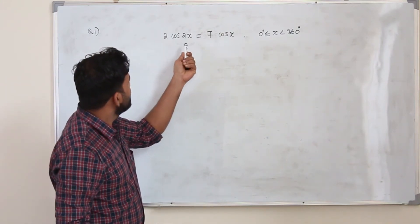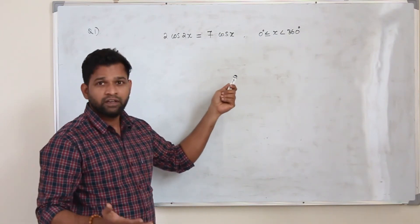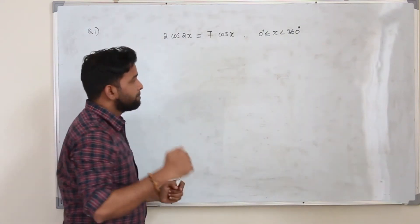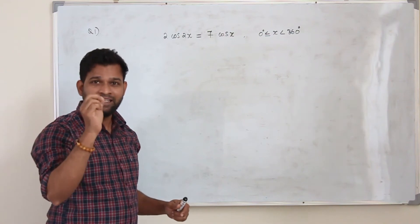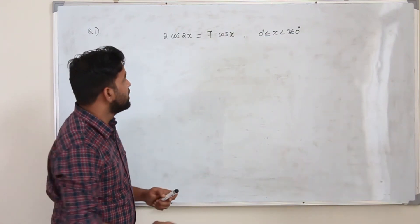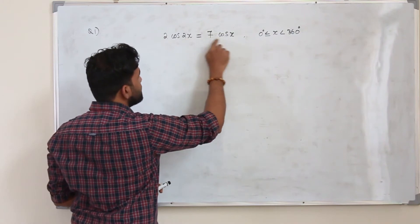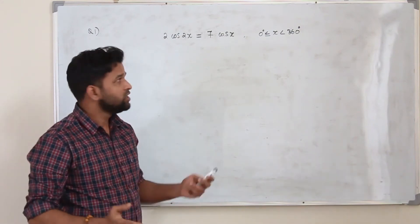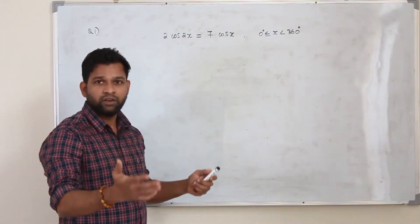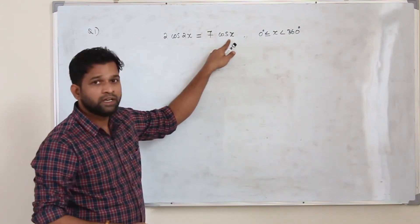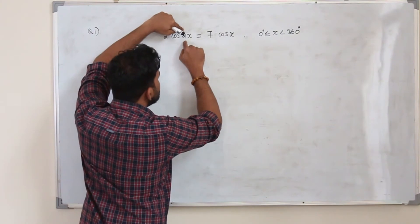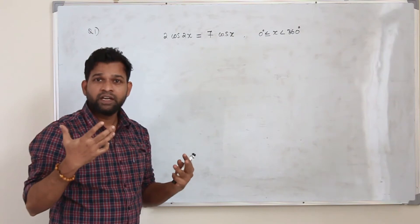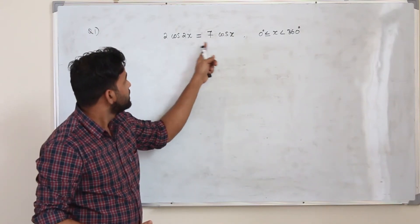Considering this equation, it is not a complex trigonometric equation because both trigonometric ratios are cosine and cosine. Step number 2: you need to look at the theta — it must be the same. Here you have cos2x and cos x. It's supposed to be cos2x and cos2x, or cos x and cos x, for our life to be easier. But in this equation you have cos2x and cos x, so you need to apply trigonometric identities to convert them to the same theta.